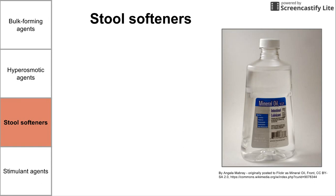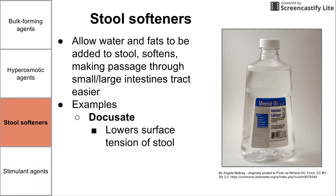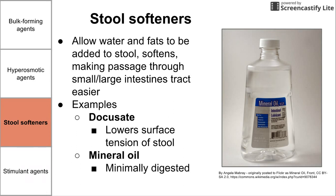Next we have stool softeners. Stool softeners allow water and fats to be added to stools, softening them and making passage through the small and large intestines easier. Examples include docusate, which lowers the surface tension of stool, and mineral oil, which is minimally digested. Mineral oil allows water and fats to be added to the stool — essentially greasing the stool so it passes through and prevents constipation.